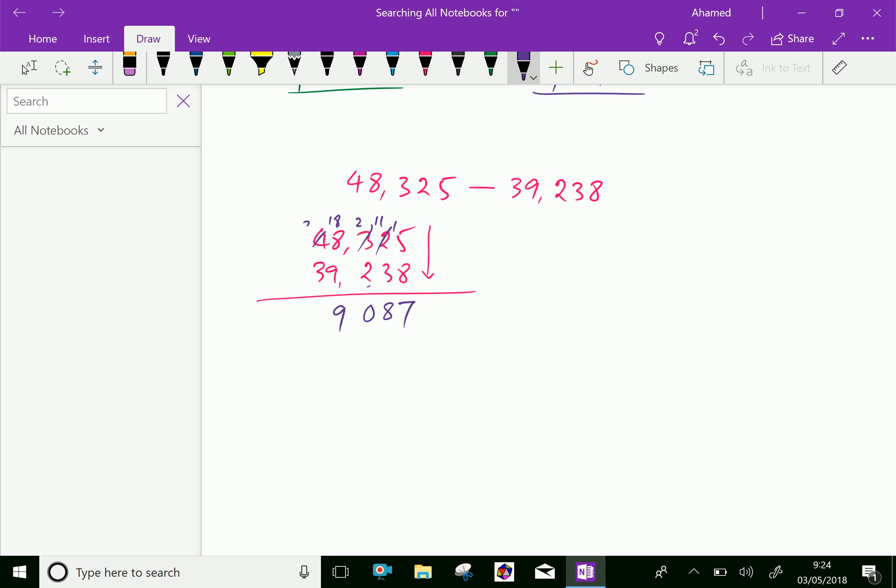Now it becomes 3. 3 minus 3 is 0. We can write this or not, no problem. The answer is 9,087.